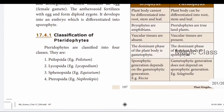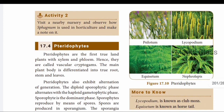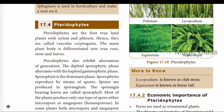Pteridophytes are classified into four groups: Psilopsida, Lycopsida, Sphenopsida, and Pteropsida. Examples include Lycopodium (club moss), Equisetum (horse tail), and Selaginella.